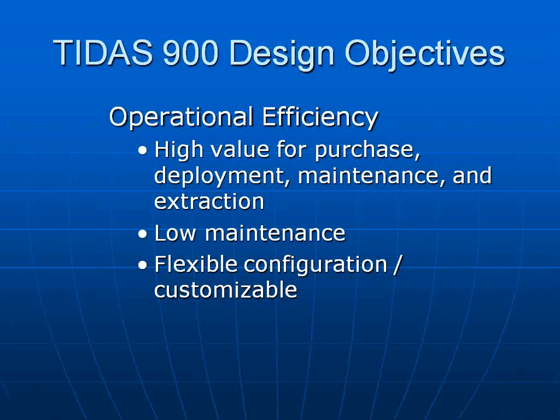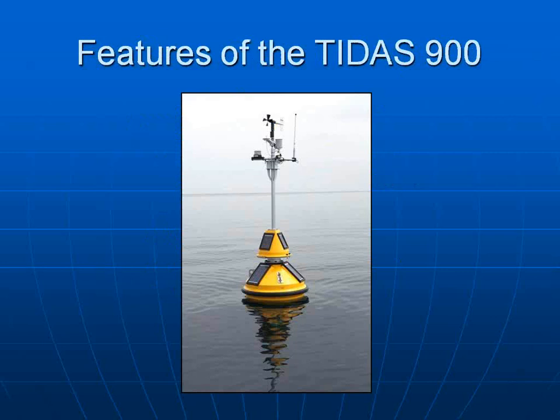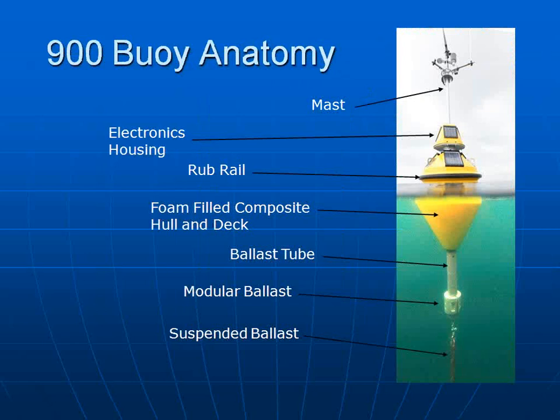The design objectives for the Titus 900 are operational efficiency. It's a high-value, high-quality, very durable buoy that requires very little maintenance and is very flexible for configuration and reconfiguration from season to season. This is a picture of the Titus 900 — it's about a meter in diameter. Solar panels, solar charge controller, and a 24-hour battery are part of the standard equipment. I will scroll through basic buoy anatomy for the Titus 900 in a top-down approach, starting at the very top. A lot of the technology will be discussed by other presenters; I'm just giving a basic overview of our equipment.